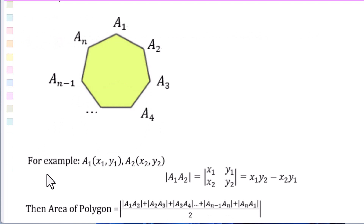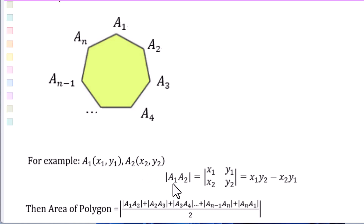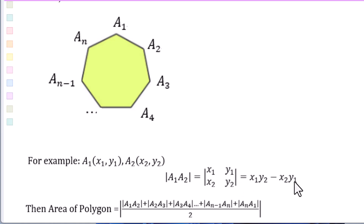For example, the coordinates for A1 are X1, Y1, and the coordinates for A2 are X2, Y2. Then the determinant of A1, A2 equals X1 times Y2 minus X2 times Y1.